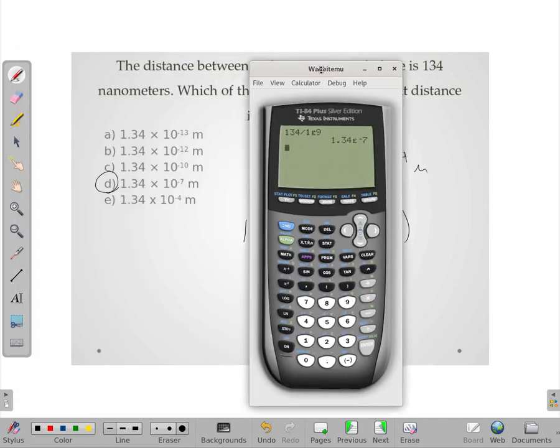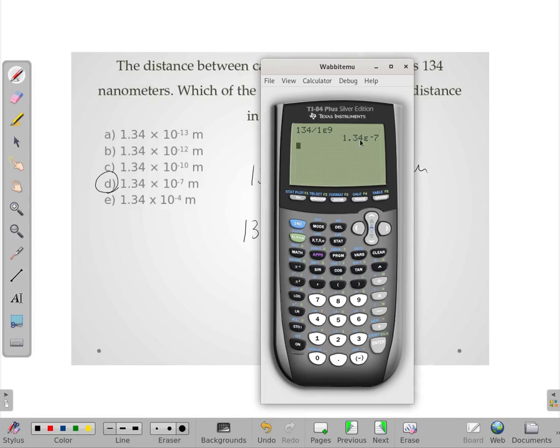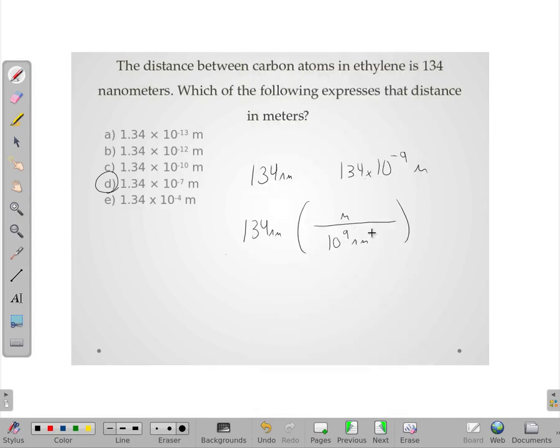And we get 1.34 times 10 to the negative 7th. And the calculator did all the work as long as we remembered our prefix definitions.